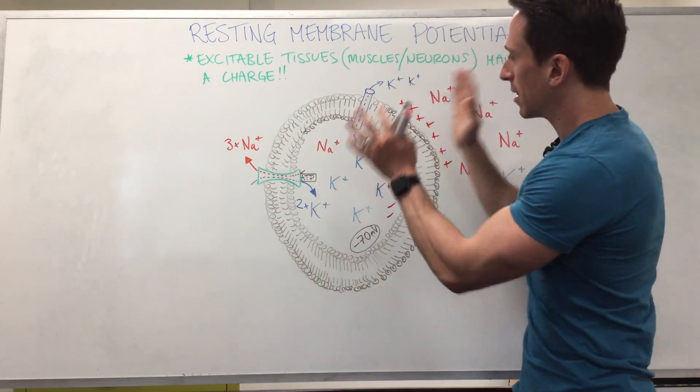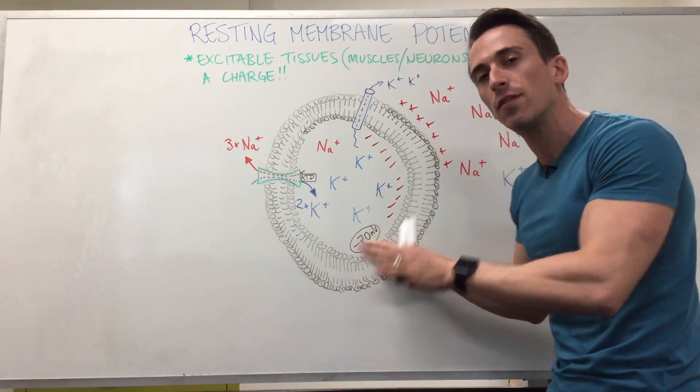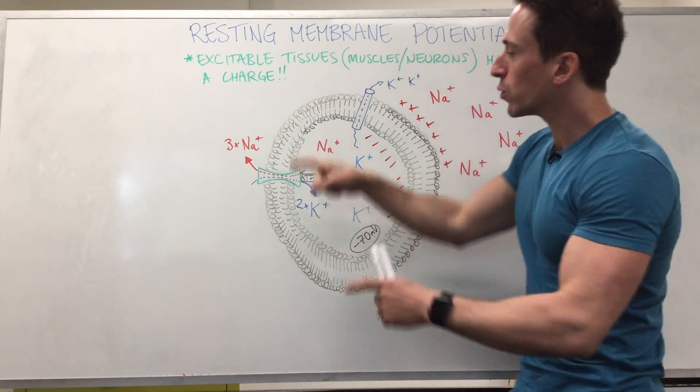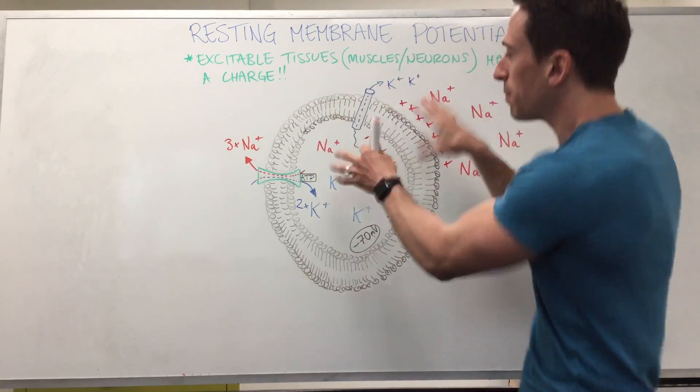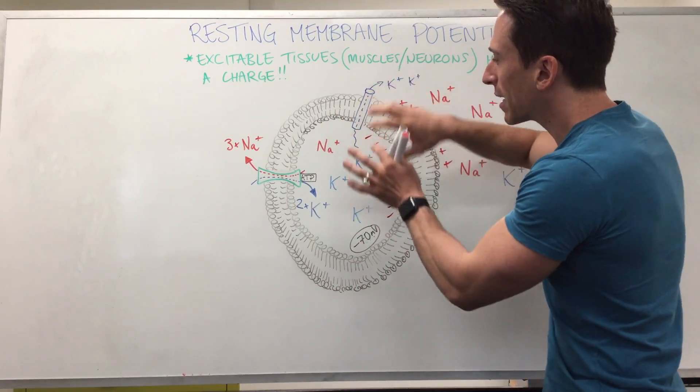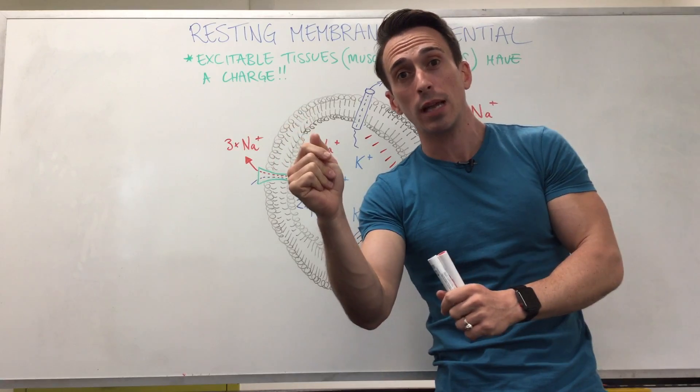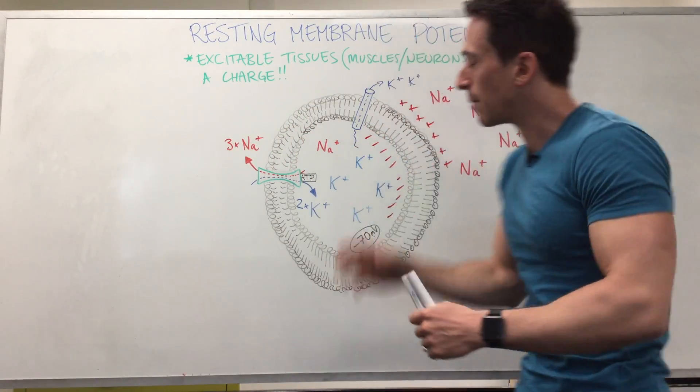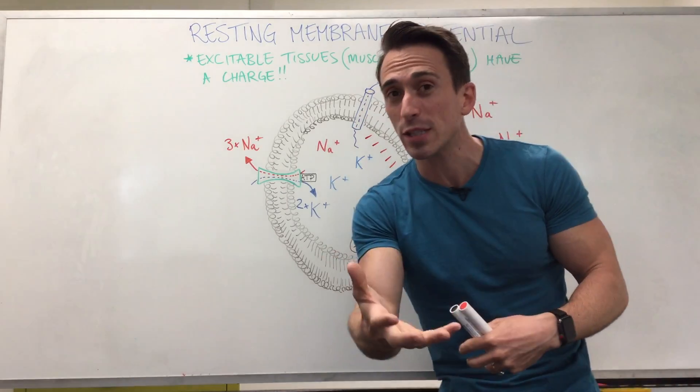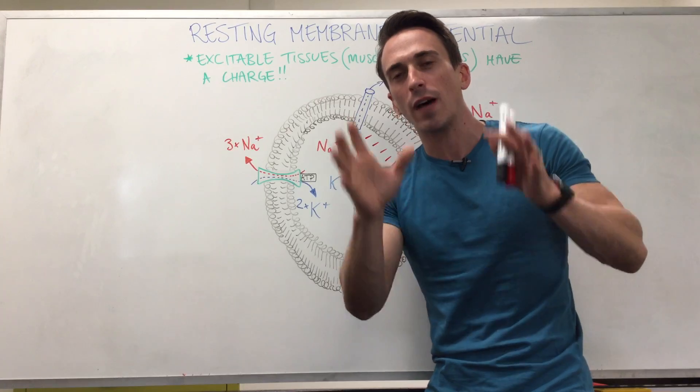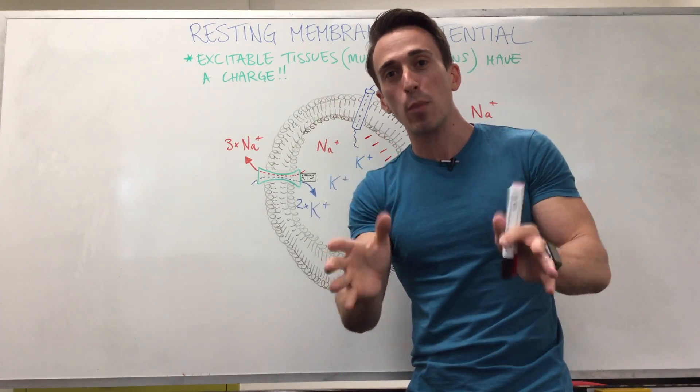At rest, the membrane potential is negative 70 millivolts inside the cell compared to outside the cell. If this was a neuron, all I'd need to do is stimulate this cell and positive sodiums would rush in, making it positive inside. I've just stimulated it. If it was a muscle cell, well what we'd need is some other positive ions that come in, such as calcium, and the muscle cell would contract. So this is the importance of understanding the resting membrane potential.